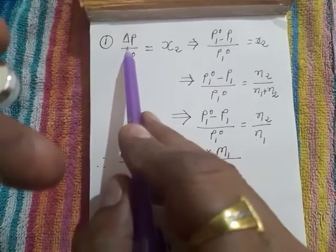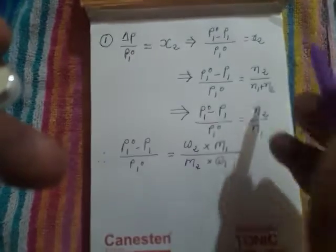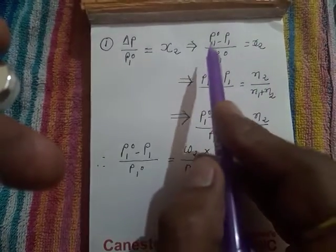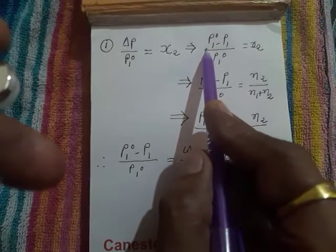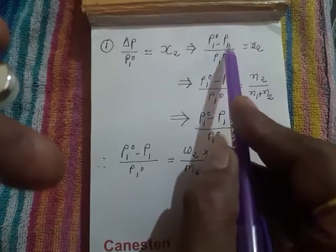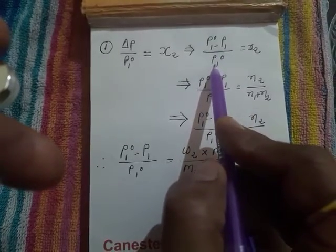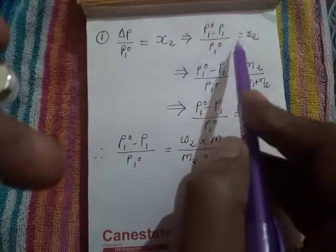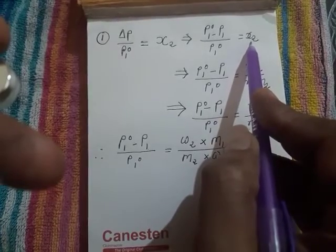As we know that delta P is nothing but P₁⁰ minus P₁. So, this one is the vapor pressure of pure solvent minus vapor pressure of solution. This once again is the vapor pressure of pure solvent and this one is the mole fraction of solute.